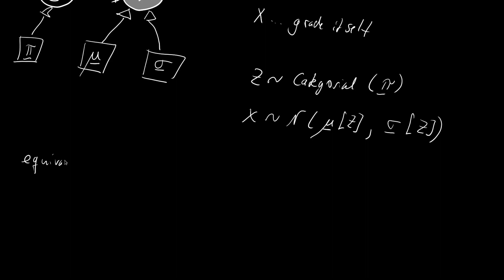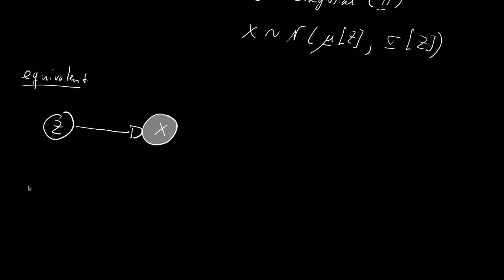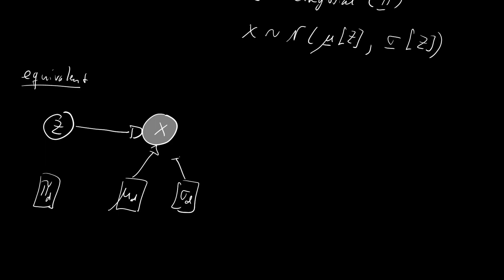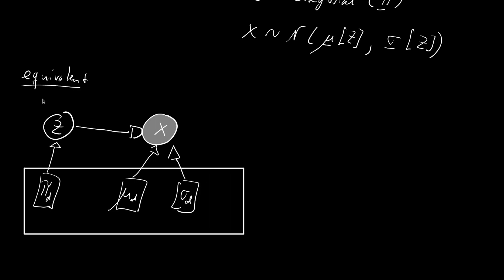For completeness, there is an equivalent way of modeling this using plate notation. Instead of writing vectors, we use a plate around the d-th entries: pi_d, mu_d, and sigma_d, where d is the number of classes. The arrows stay the same, but we express the repeated structure with the plate.